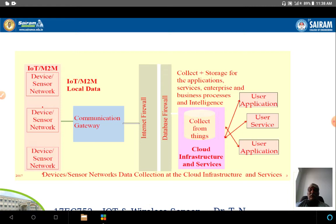In the Zively architecture diagram, on the left-hand side there is a device or sensor network. Data passes through a communication gateway, through internet and database firewalls, to the cloud service. In the cloud, data is collected and stored for different applications, services, enterprise business intelligence, and business processes — enabling intelligent decisions.